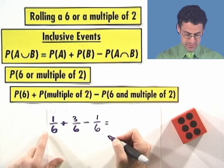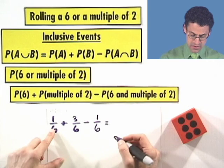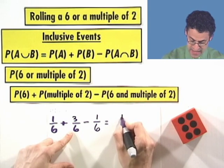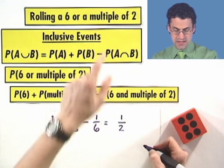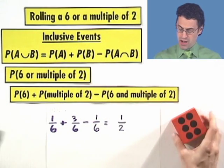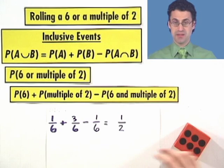And what do we see here? The 1/6 minus 1/6 is 0. We're left with just 3/6, which is 1/2. So the probability of rolling a 6 or a multiple of 2 on a number cube turns out to be exactly 1/2. So that is the probability. Neat stuff.